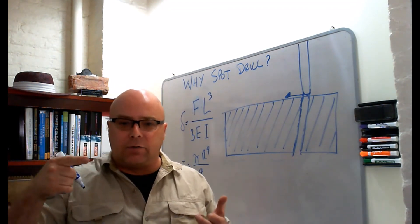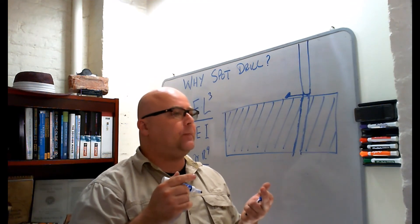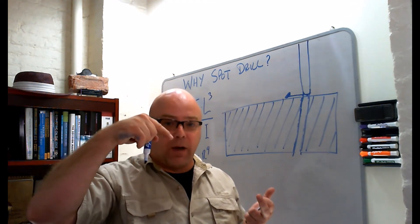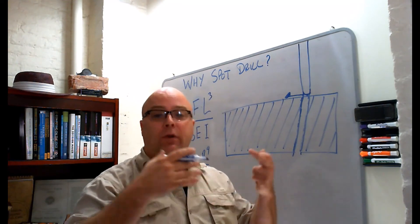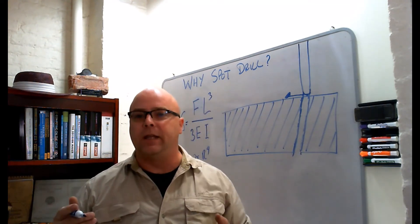Anybody that's ever used a hand drill to drill through a piece of metal has seen this happen. And if it deflects too much, then the drill breaks and we don't drill the hole at all. So how does a spot drill keep this from happening?